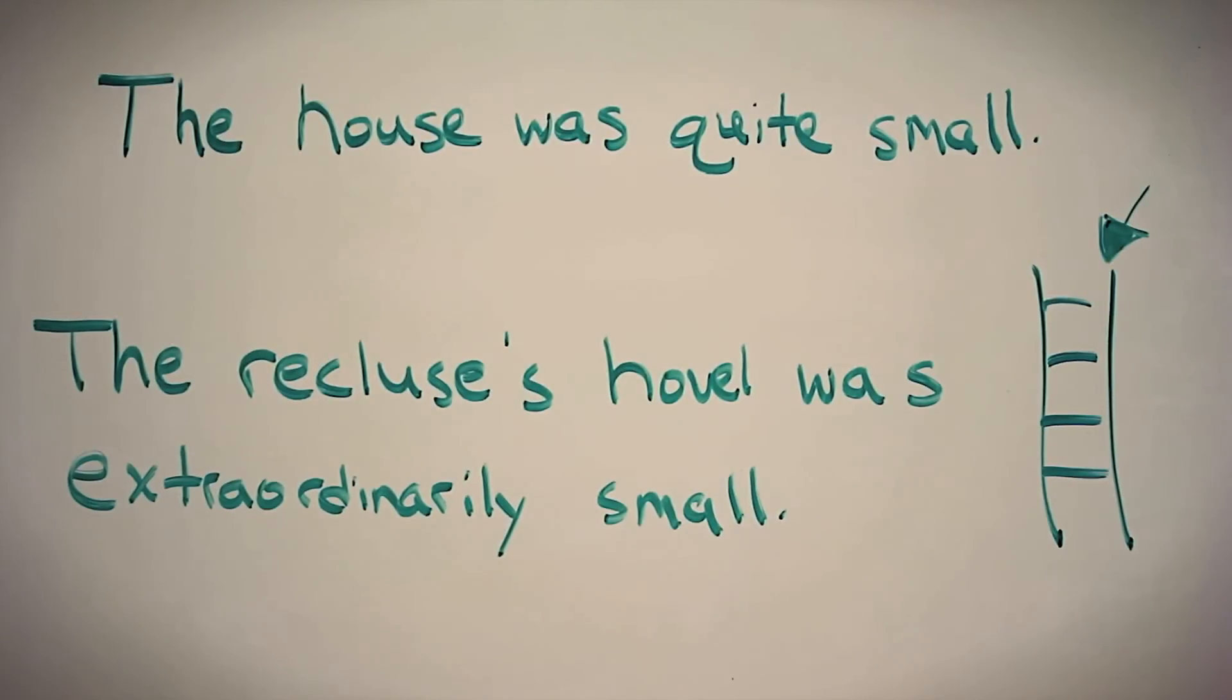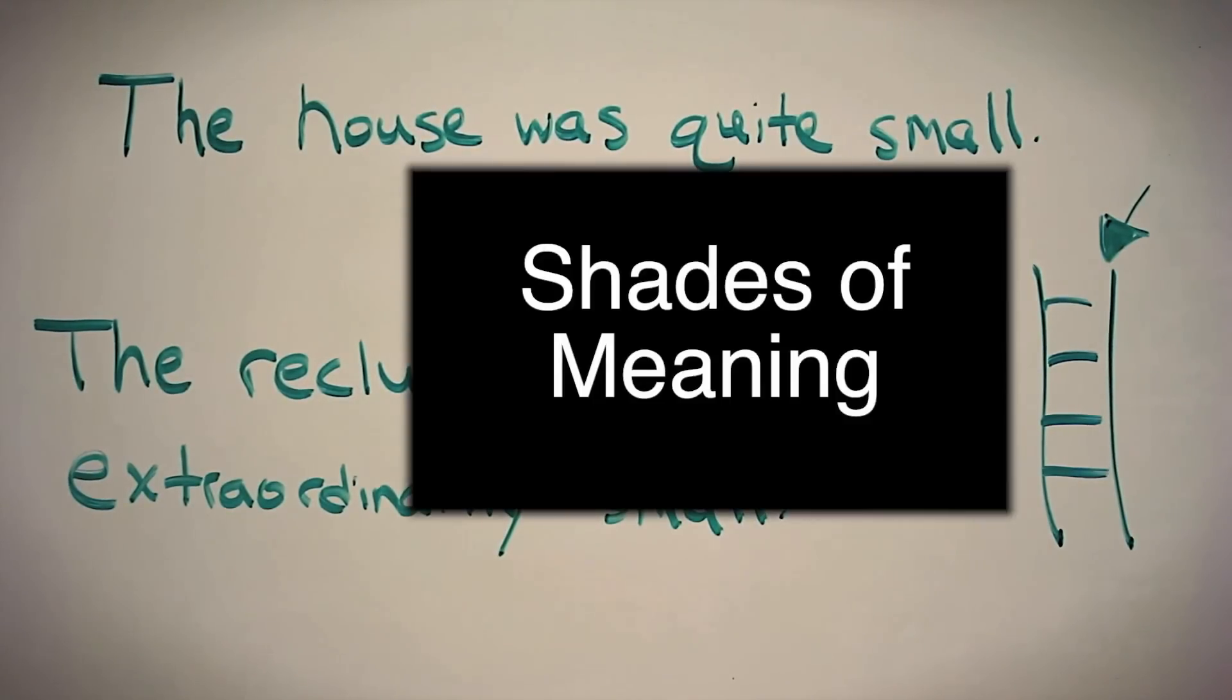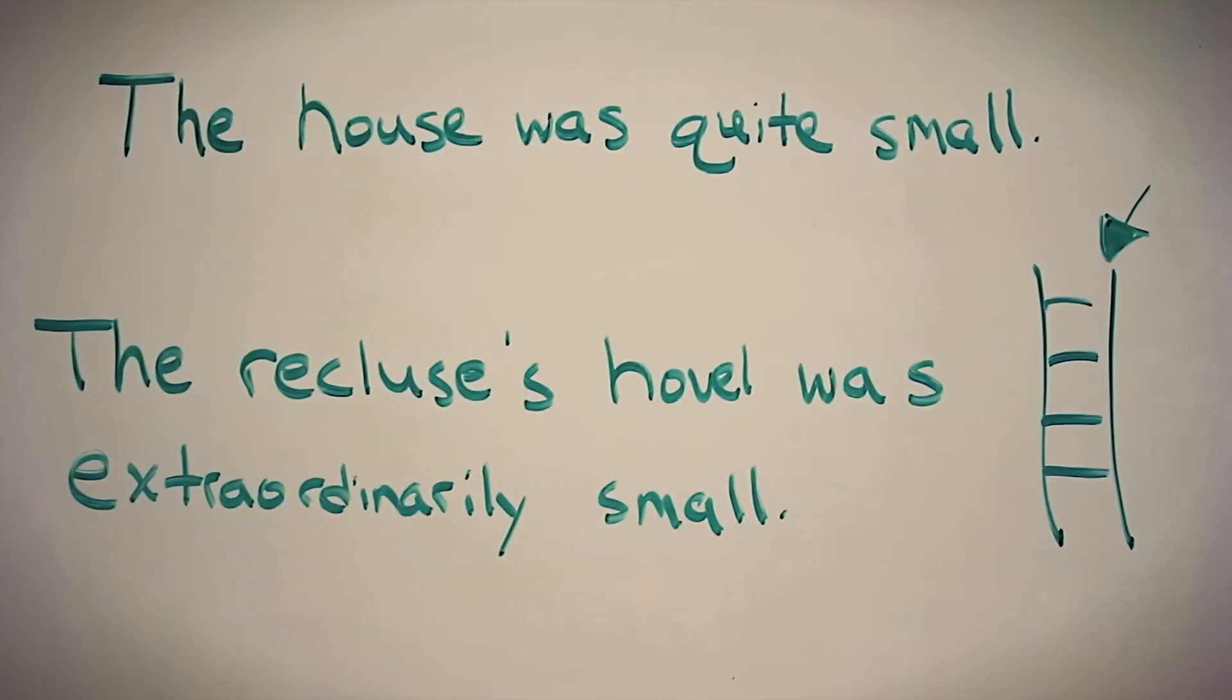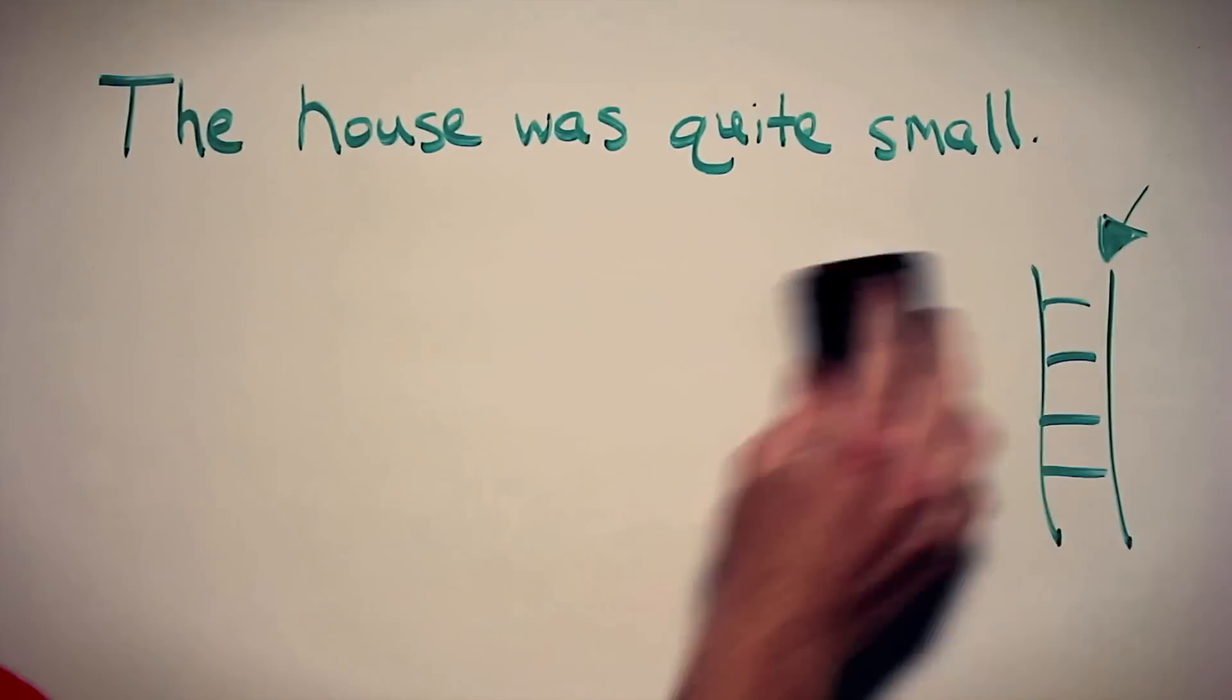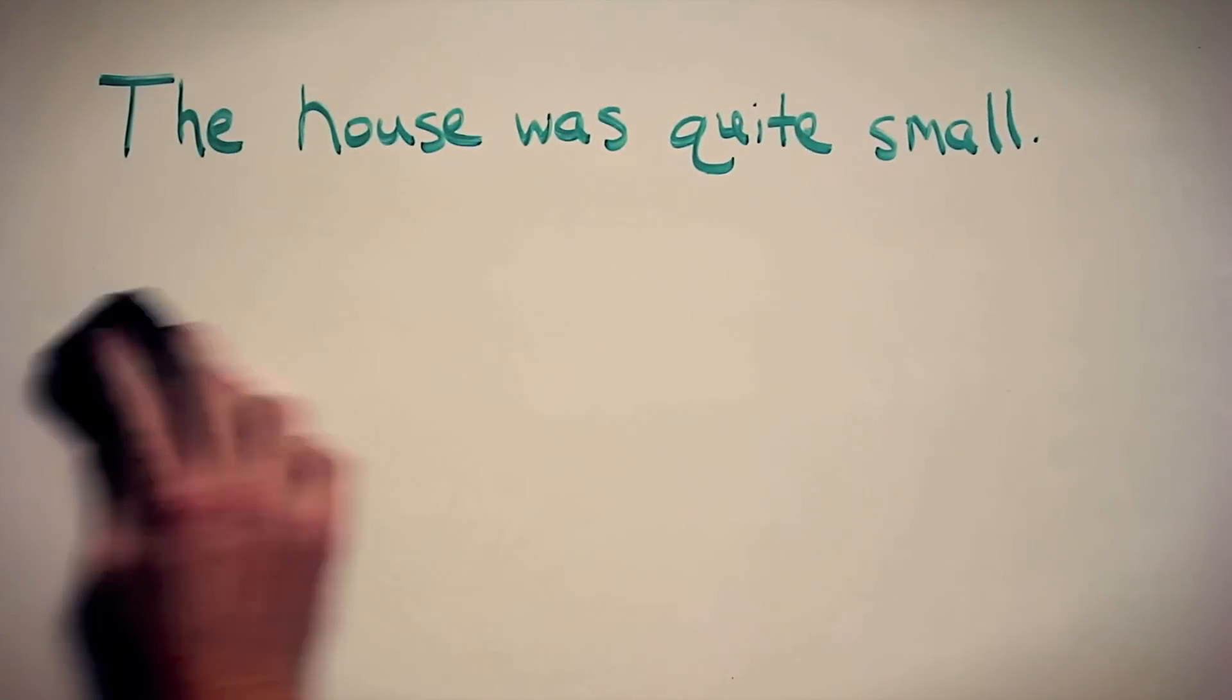Now I want to look at one other thing real quick here, and that is shades of meaning. Shades of meaning is what it sounds like. It is two different words which have the same connotation, probably a similar denotation, but slightly different meanings. We can use the same examples here. So let's look at the sentence: The house was quite small.